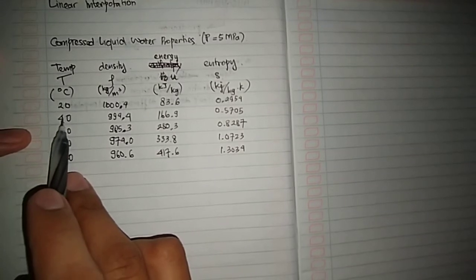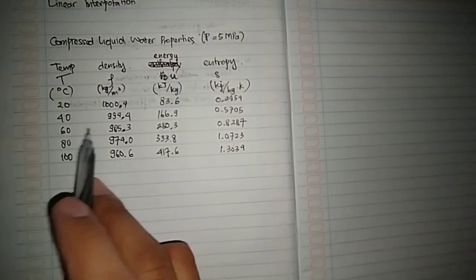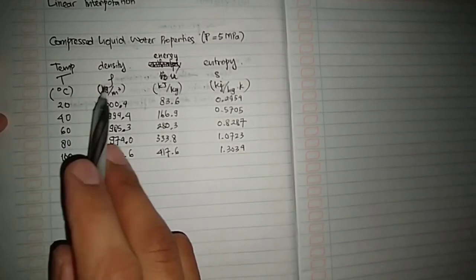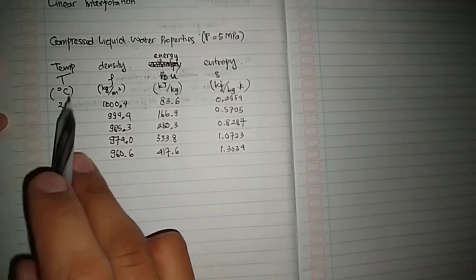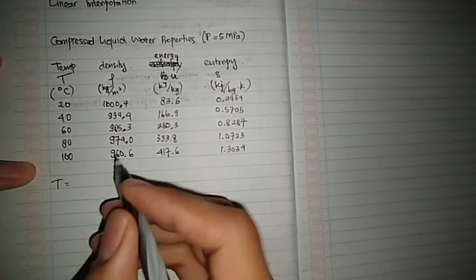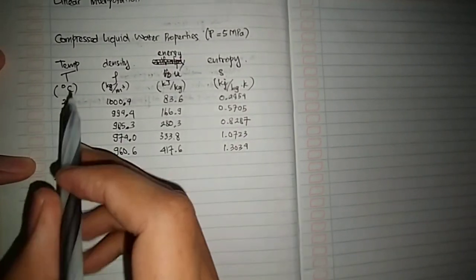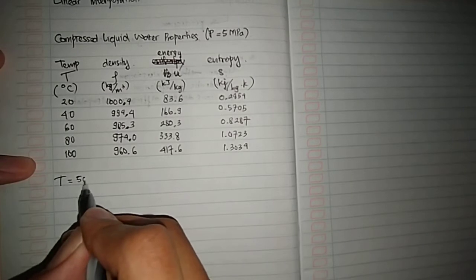We have 20, we have 40, we have 60. But we don't have the value of density for the temperature at 50, so we are going to find the density when the temperature is 50.